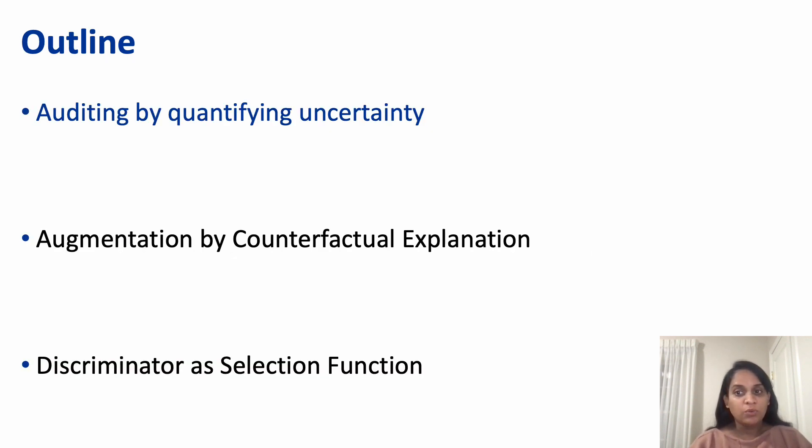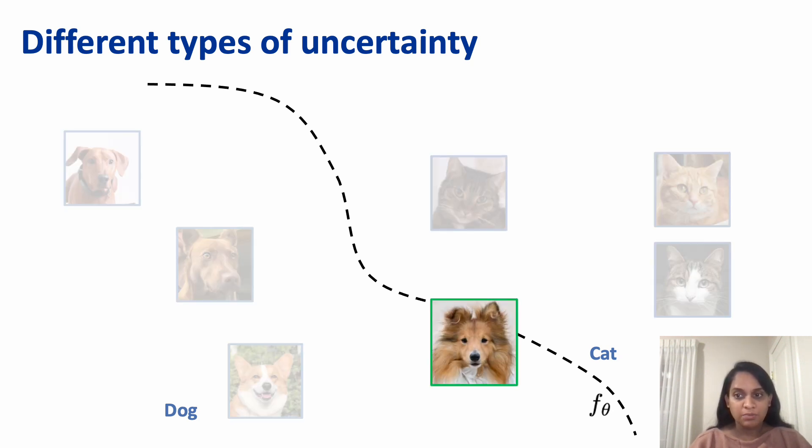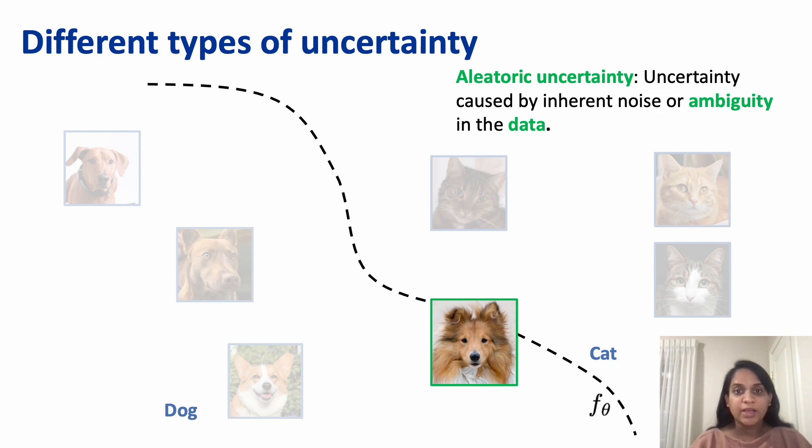Let's first see how we can identify an overconfident classifier. We consider a binary classifier trained to separate dogs from cats. Consider this test example. Its nose is more like a dog while its ears are similar to cat. Such samples have high aleatoric uncertainty.